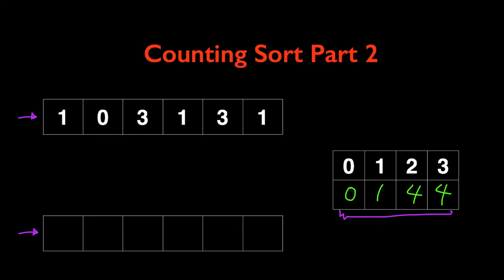When we are looking at the first element of this array, which is 1, we're going to check what the starting index should be for this number from the array that we constructed. We see that the starting index is 1 so we're going to put this number into index 1 of the new array.